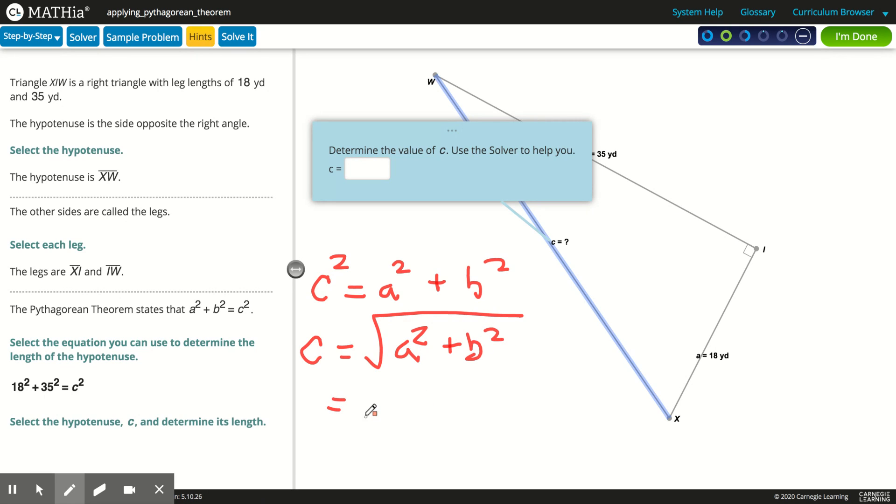And so that means I'm taking the square root of 18 squared plus 35 squared. And then to kind of skip steps, I'm just going to put it in my calculator. So 18 squared plus 35 squared will give me 1549, what you got from that solver.